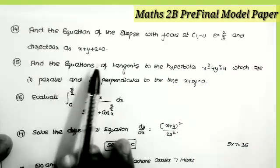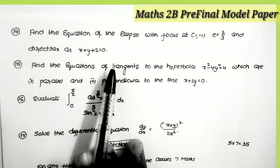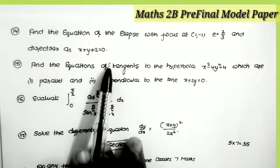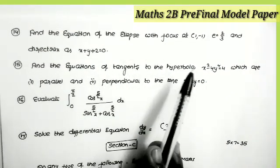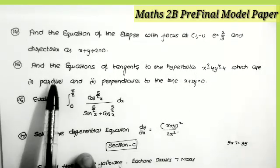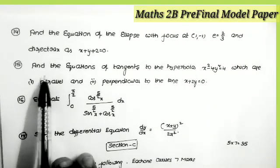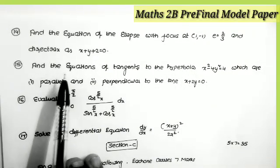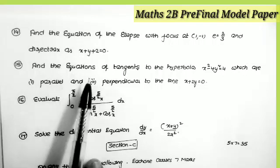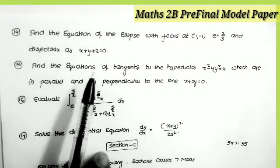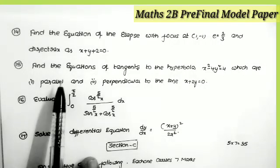The next question: find the equation of the ellipse with focus (1, −1), eccentricity e = 2/3, and equation of the directrix x + y + 2 = 0. This is a most important model.